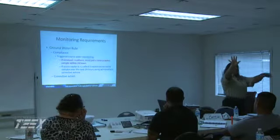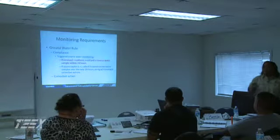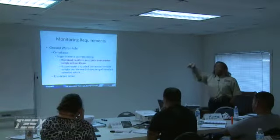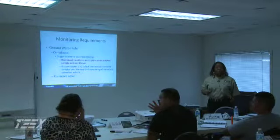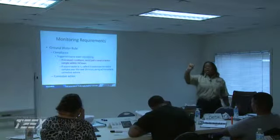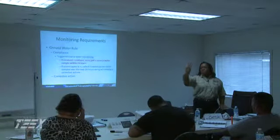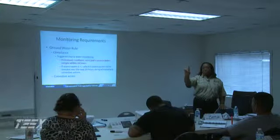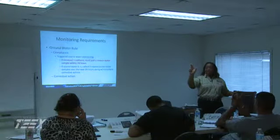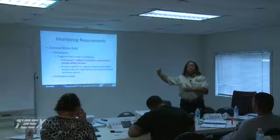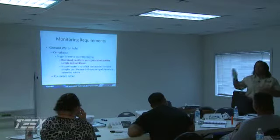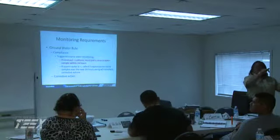If the source sample comes back positive, within 24 hours you've got to pull five more source samples. Not from the distribution system — we're talking the groundwater rule here. Keep in mind, for a positive distribution system sample, you're pulling three repeats for every positive — back to the source, one within five connections upstream, one within five connections downstream — that's your distribution system response. But with the groundwater rule, you're going to the source. If that source is positive, that's five repeats within 24 hours from the source.